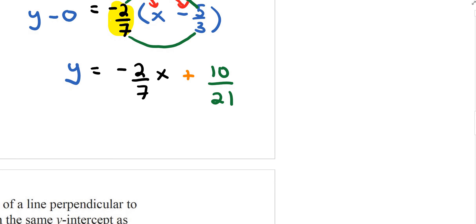Right now this is in slope-intercept form. We need to write it in standard form. Looking at the denominators, I have 7 and 21, and the least common multiple between 7 and 21 is 21. So let's multiply everything by 21.